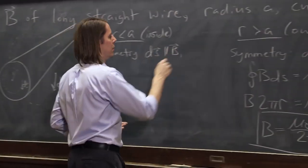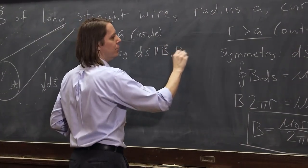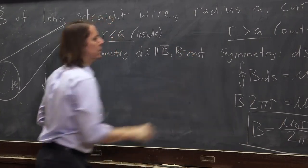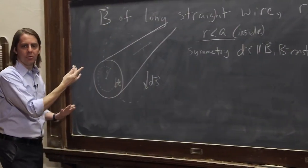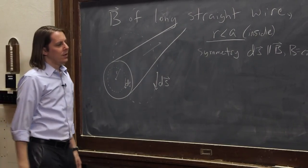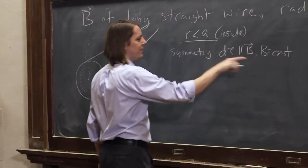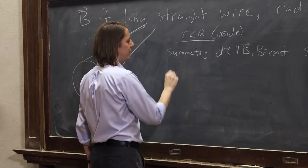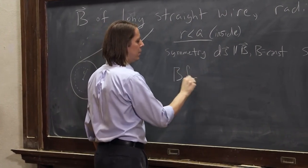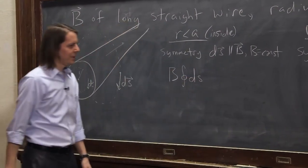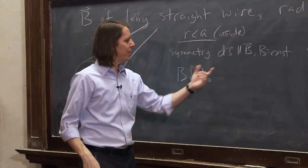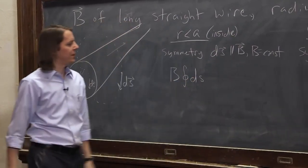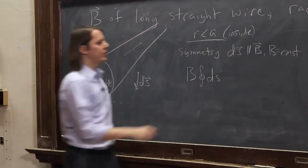That's all basically the same. And it's also actually true that B will be constant going around this symmetric circle. There's no reason the B field would change going around that circle. So similar arguments. Then if it's B dot dS, then it turns into B times the integral of dS. The parallel part got rid of the dot product. The fact that B is constant brought it out of the integral.